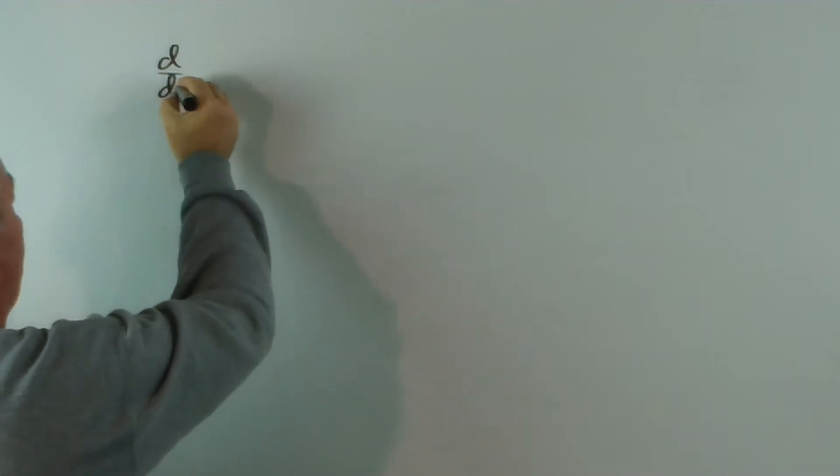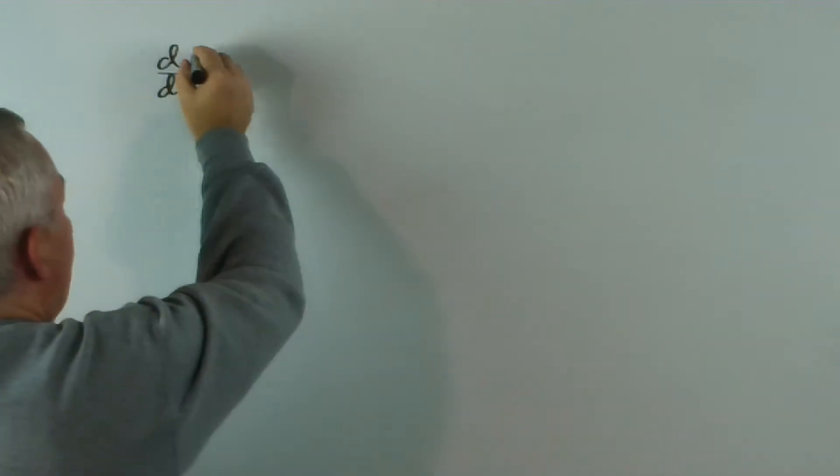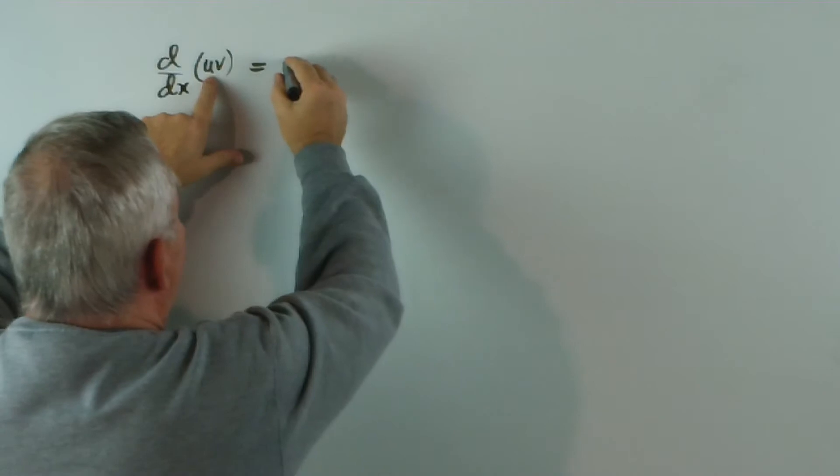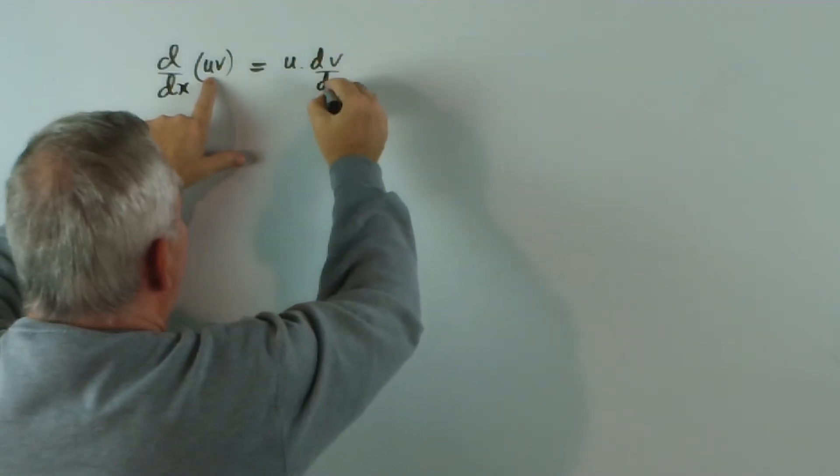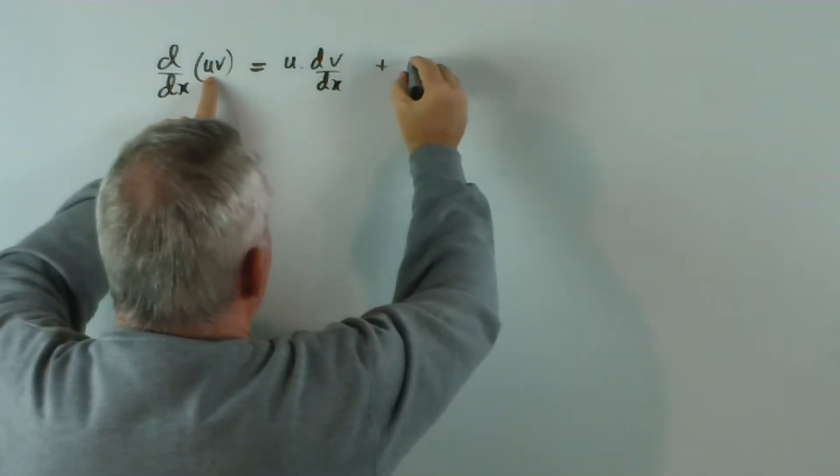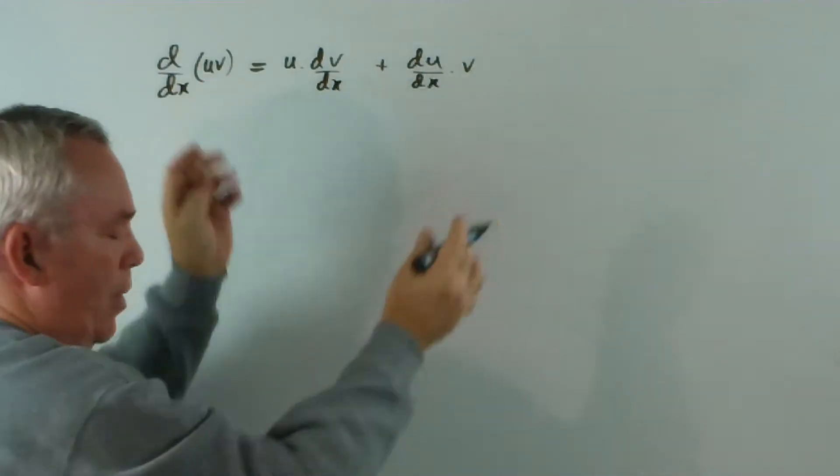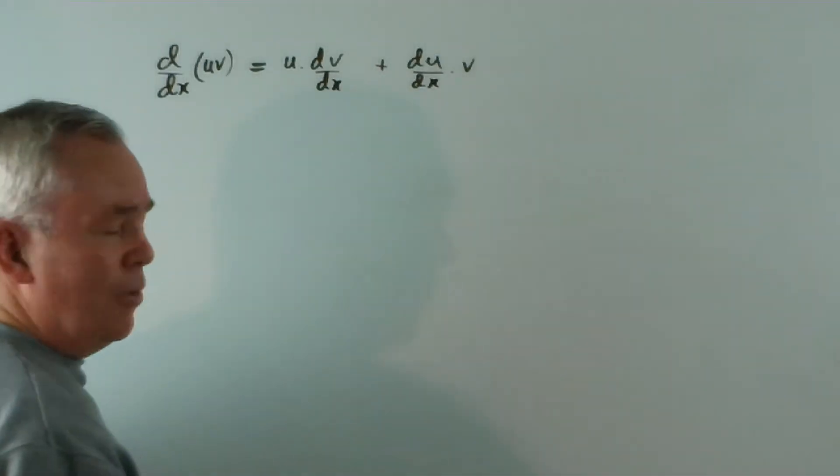Now, you will know that when we find, for example, the derivative with respect to x of - instead of using f(x), g(x), I just use uv - that's common - the derivative of the product of two functions is the first function times the derivative of the second plus the derivative of the first function times the second, or the other way around. That is our product rule for differentiation.